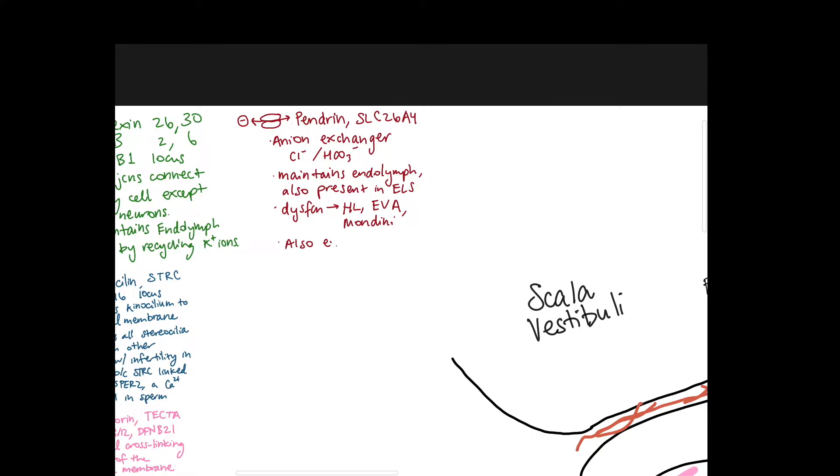It exchanges another important anion, iodine, in the thyroid and so dysfunction of this channel also leads to a euthyroid goiter. So this is Pendred syndrome. It's autosomal recessive but it is the most common cause of syndromic hearing loss.